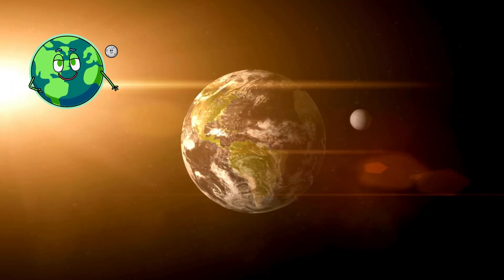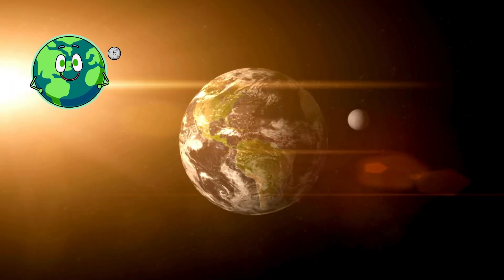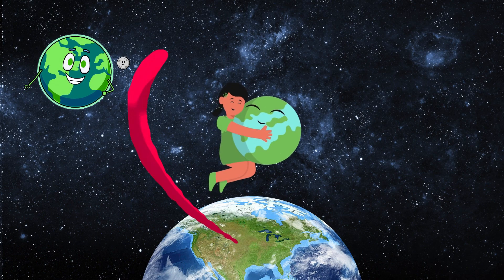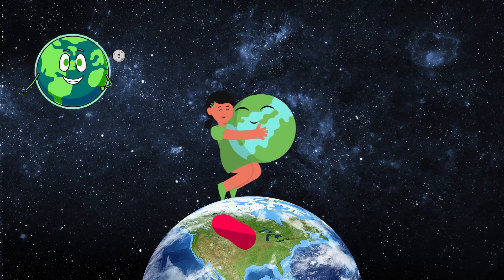In our solar system, Earth has a special place. It's just the right distance from the sun for life to thrive. We also have one moon that orbits us, lighting up our night sky.